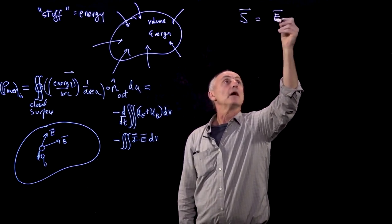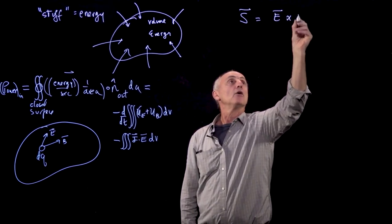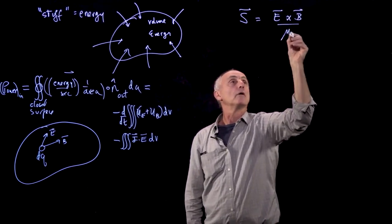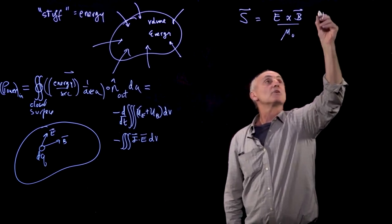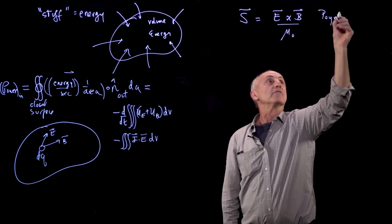But what works for us is a vector which we'll refer to as the Poynting vector. That's its name, and it's given by E cross B over μ0.